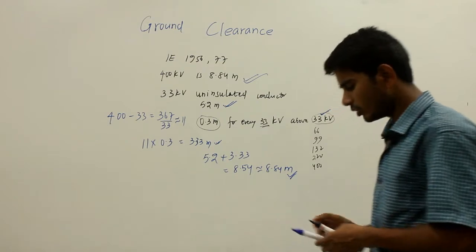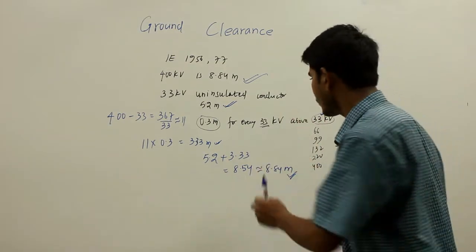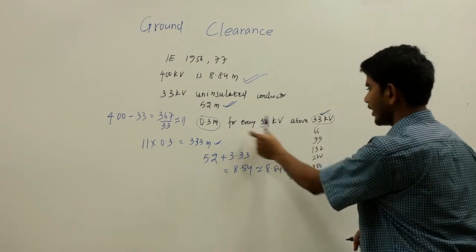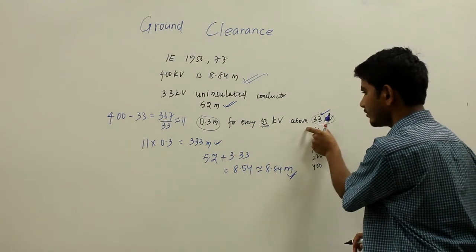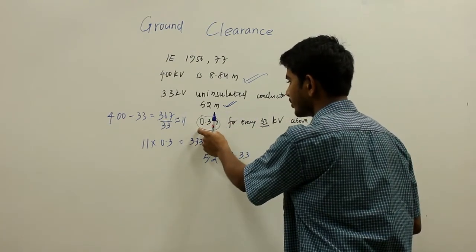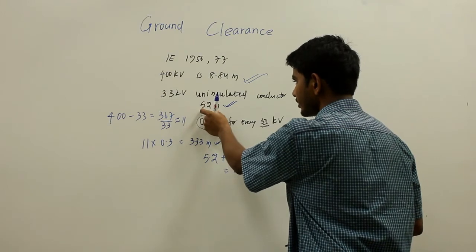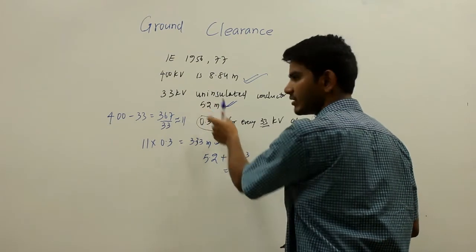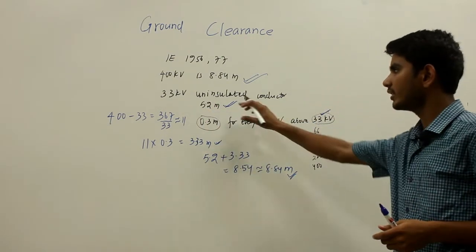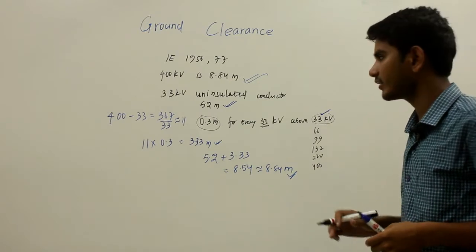So, according to this logic, for every 33 kV above 33 kV, we are going to increase the clearance by 0.3 meters above the base clearance of 5.2 meters for a 33 kV uninsulated conductor.